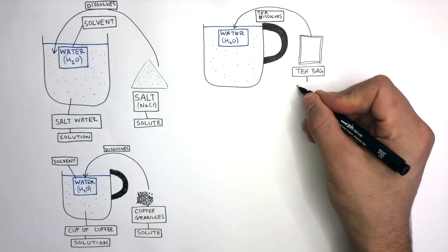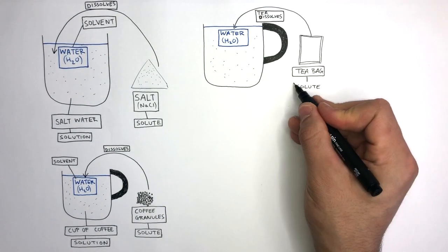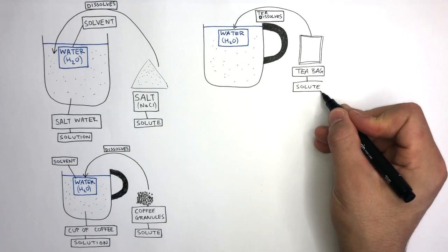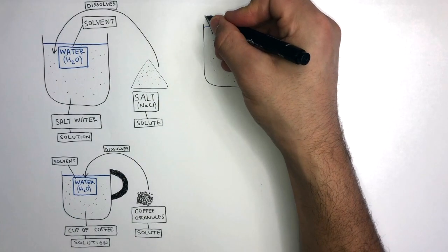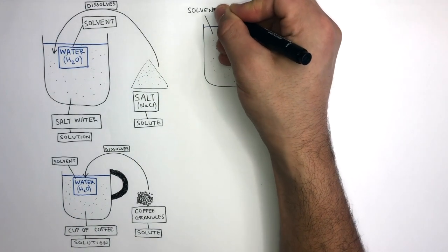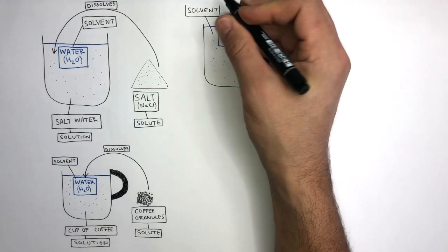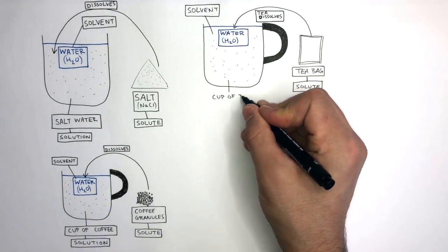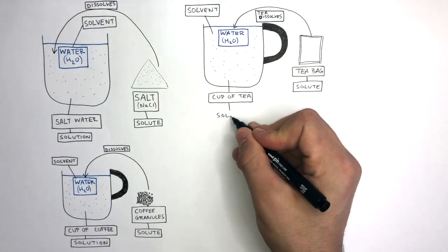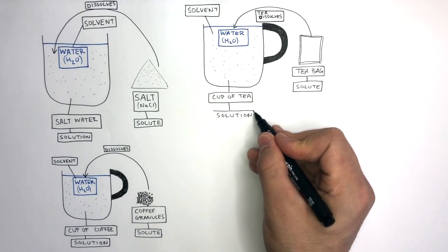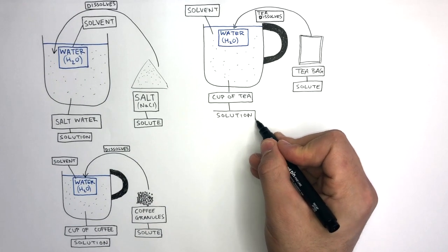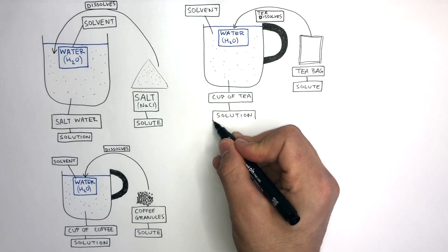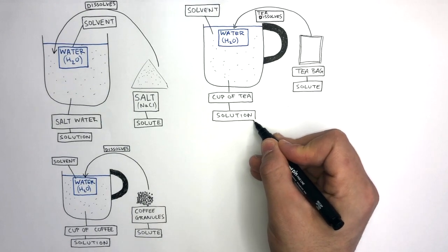The tea is the solute because this is the substance which dissolves in the solvent. The water is the solvent because this is the liquid in which the solute dissolves in. The cup of tea is the solution — this is a mixture between the solute and the solvent, in this case the tea dissolving in the water.